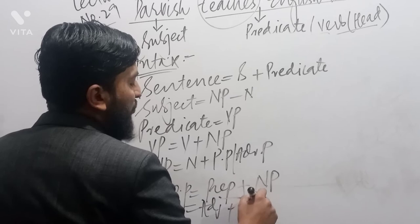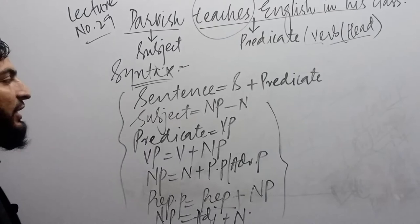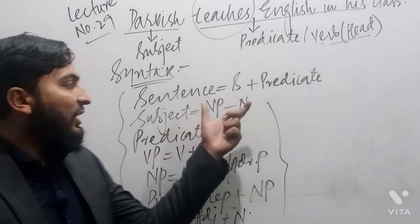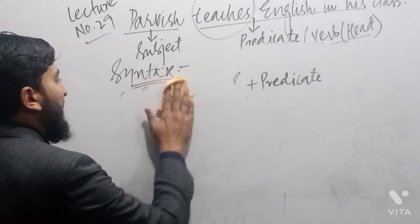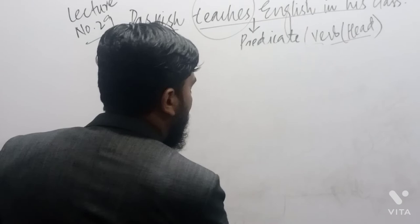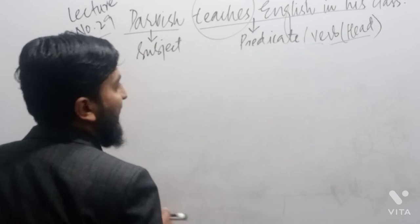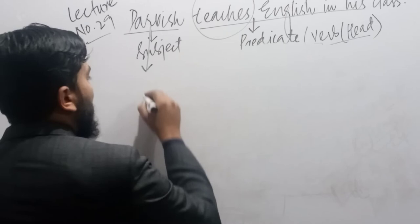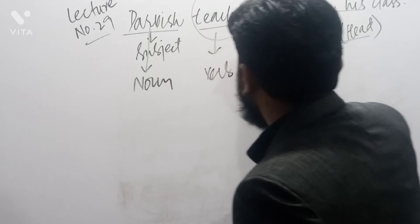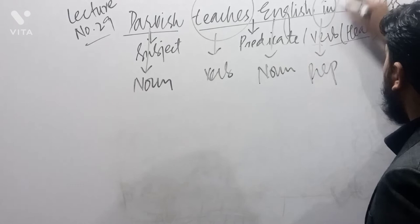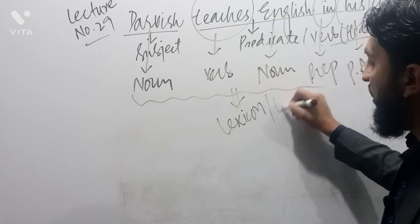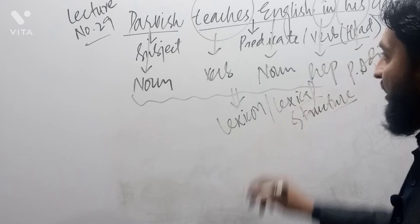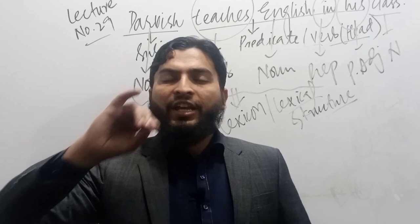This is the syntactical form of the structure. Now drawing the lexical part — also called terminal vocabulary — at the bottom: 'Darvesh' is a noun, 'teaches' is a verb, 'English' is a noun, 'in' is a preposition, 'his' is a possessive adjective, and 'class' is a noun. These fall under the category of lexical or terminal structure.